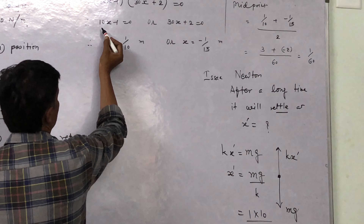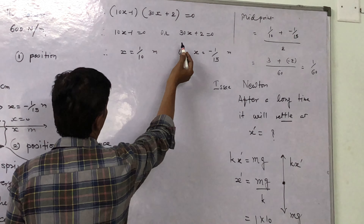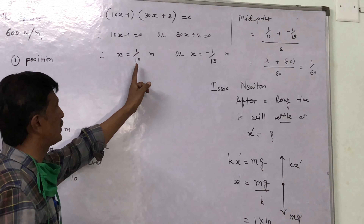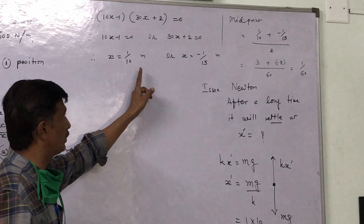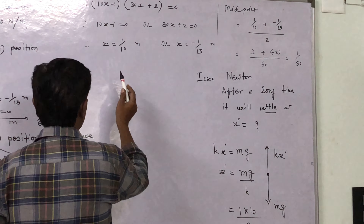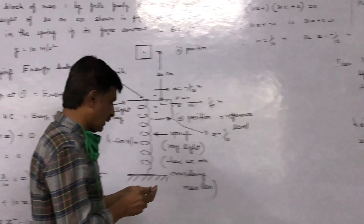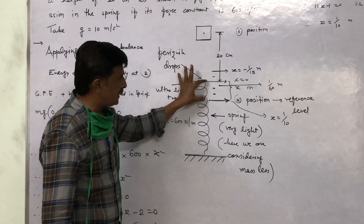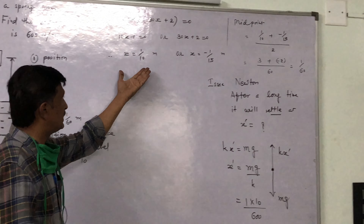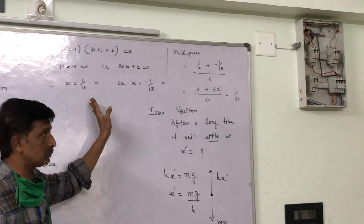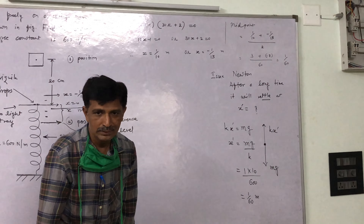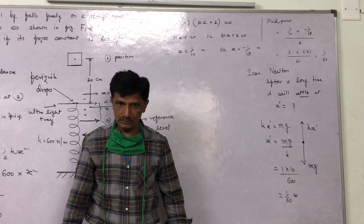Splitting the middle term: 300x² − 30x + 20x − 2 = 0. Taking common 30x: (10x − 1). And taking common 2: (10x − 1). So (10x − 1)(30x + 2) = 0. Therefore x = 1/10 meter, or x = −1/50 meter. But since we supposed x is the compression, negative is not physically possible here.